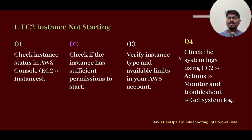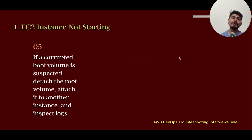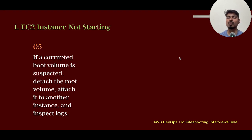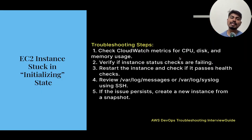Check the system logs by going to EC2 Actions, then Monitor and Troubleshoot, and select Get System Logs — there may be errors visible there. If your EC2 instance root volume has been corrupted, detach the root volume, attach it to another EC2 instance, and inspect the logs to find something actionable.